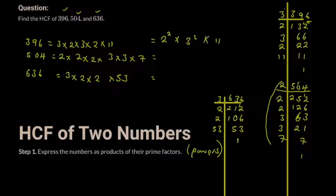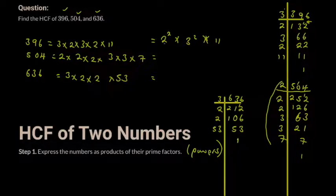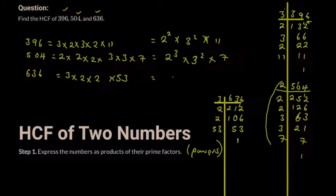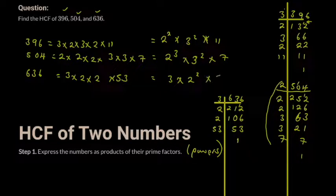You count the number of each prime factor. For 504: two to the power three, multiplied by three squared, multiplied by seven. For 636: three multiplied by two squared multiplied by 53.